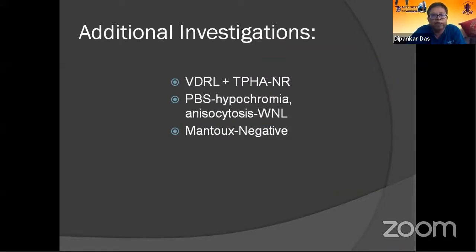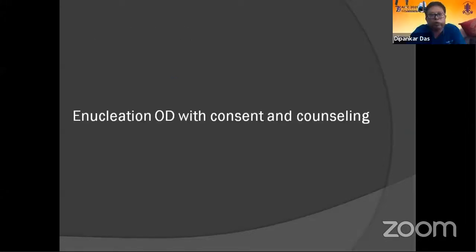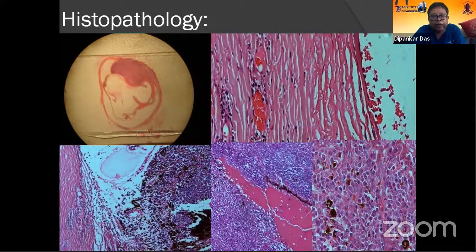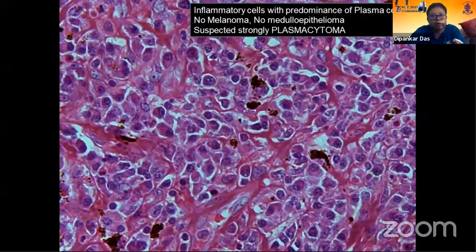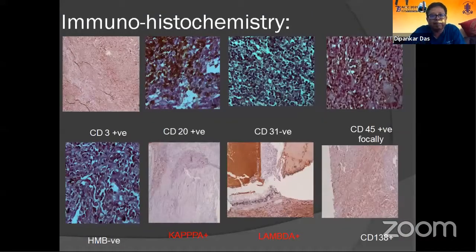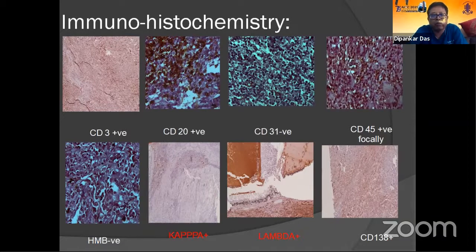Peripheral blood showed some anemic changes. Enucleation was planned, and the enucleated specimen showed exudative retinal detachment with a lesion in the ciliary body region. These cases showed scleritis as well as ciliary body involvement. On high-power microscopy, there were large plasma cells. Initially, we thought whether we were dealing with plasmacytoma. Serum electrophoresis showed some fraction involvement, but the lesion was polymorphic — both CD20 and CD3 were positive. So it is not a tumor, but something else. CD138 for plasma cells was positive, and HMB45 was negative, ruling out melanoma.